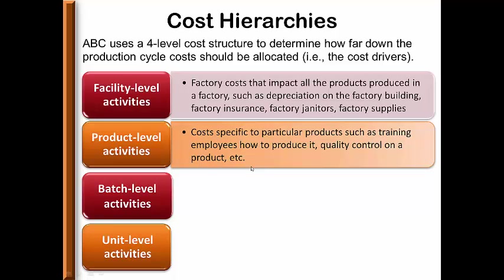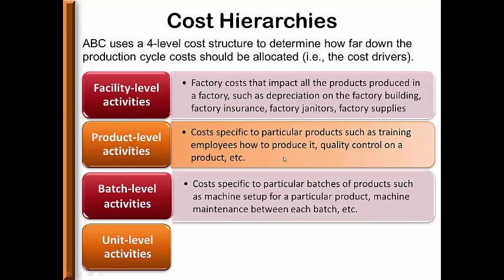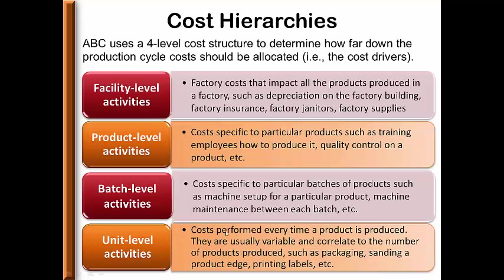Production-level activities are costs for specific products, such as costs for just Coca-Cola Zero or just Sprite. It could include quality control or training employees how to produce products. Batch-level activities are specific to particular batches of products, such as setting up a machine, cleaning the machine after each batch, or doing periodic maintenance. Unit-level activities are performed every time a product is produced. Some companies refer to direct materials and direct labor as unit-level activities. These costs are usually variable and correlate to something done with each individual unit. Machine-type costs are also considered unit-level activities.